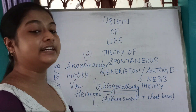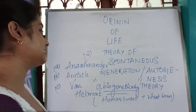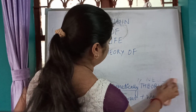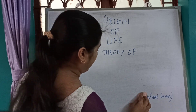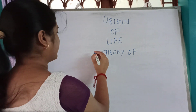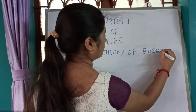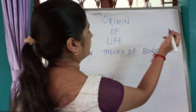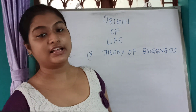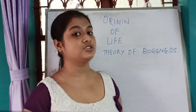Now we move to the third theory — the theory of biogenesis. It was around the year 1661 that Francisco Redi first disproved the theory of spontaneous generation, because he performed an experiment.